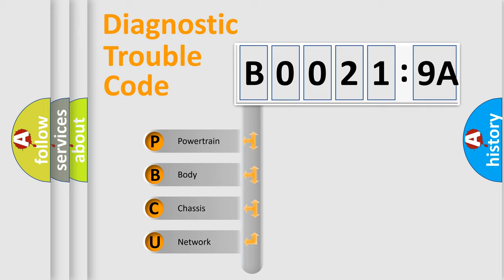If the second character is expressed as zero, it is a standardized error. In the case of numbers 1, 2, or 3, it is a manufacturer-specific error code.